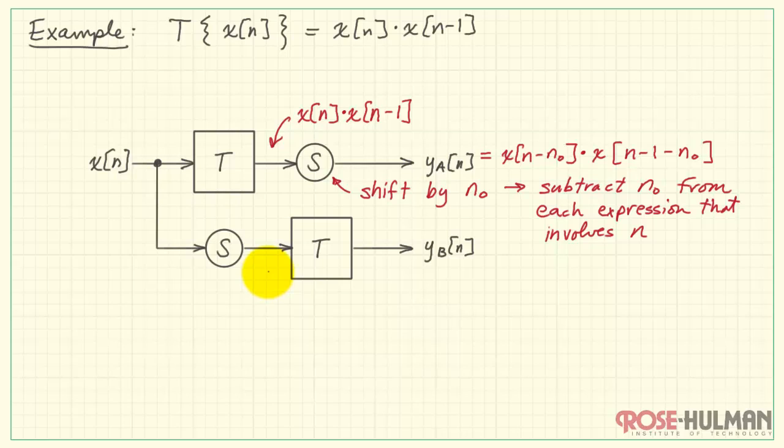Alright, let's try this now on the pre-shifted version. Here's my delayed version of the X, and then we'll pass that through the system operator T. The system operator says take the current input, which I'll call now X of N minus N-naught, and then we multiply it by the previous input.